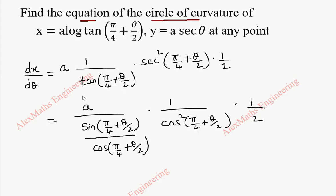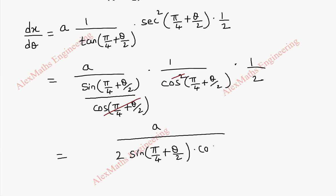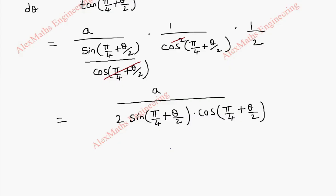We can cancel cos(π/4 + θ/2) and the square. So finally we are left with the 2sinθcosθ form. So this is a by 2, then sin(π/4 + θ/2) and cos(π/4 + θ/2). This is a by 2 sin x cos x.